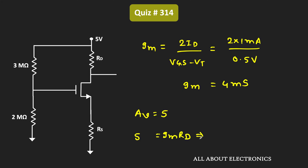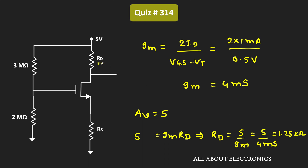To get a gain of 5, the required value of the drain resistor RD = 5 / gm = 5 / 4 mS = 1.25 kΩ. So the required value of RD is 1.25 kΩ.